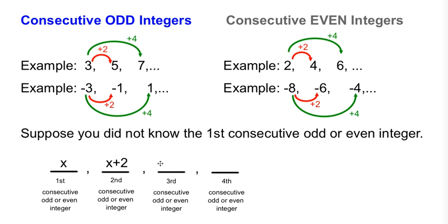What would be the expression to find the third consecutive odd or even integer? That would be x plus 4. Can you guess what the algebraic expression would be to find the fourth consecutive odd or even integer? I hope you have in your head x plus 6.